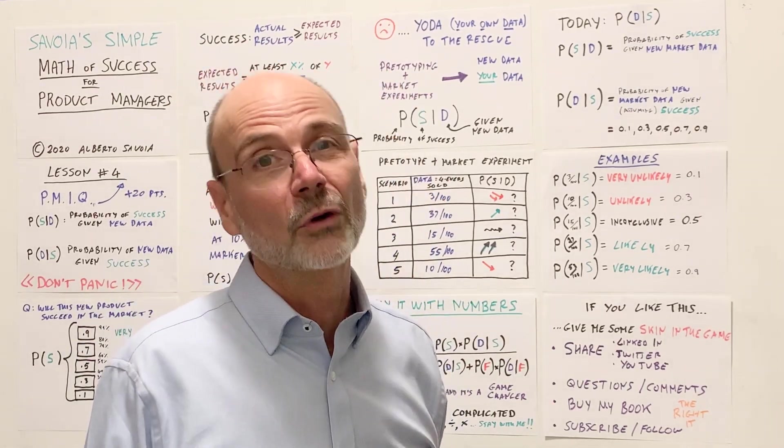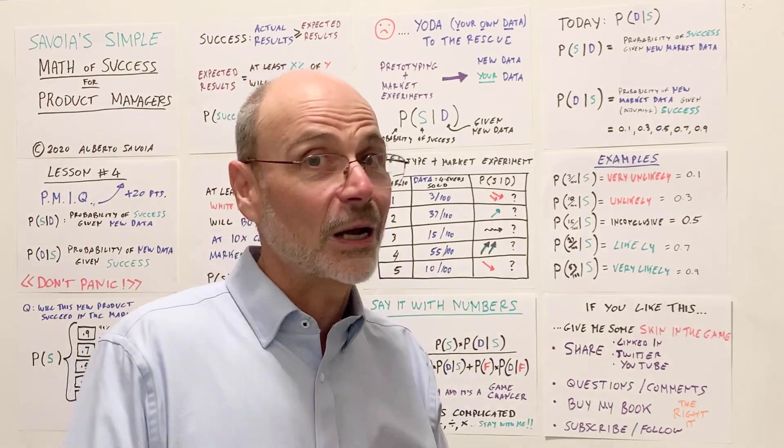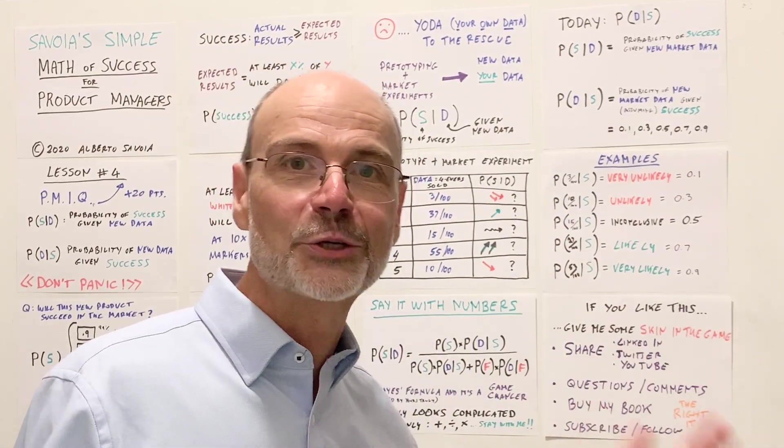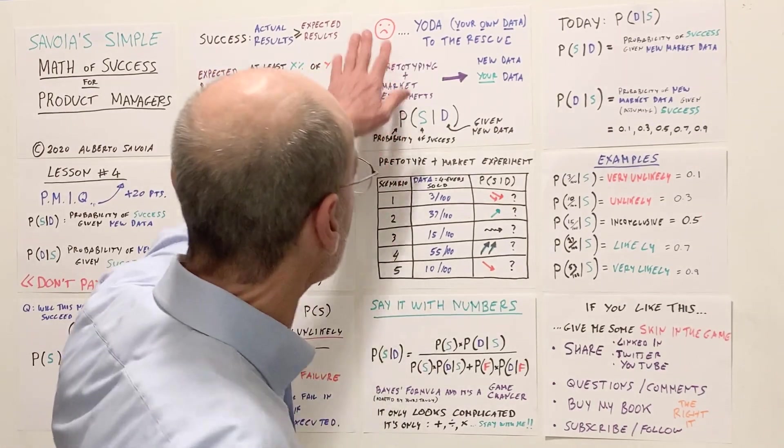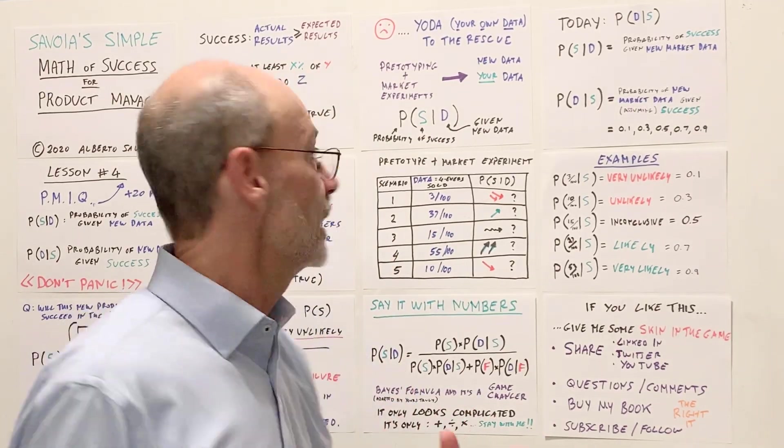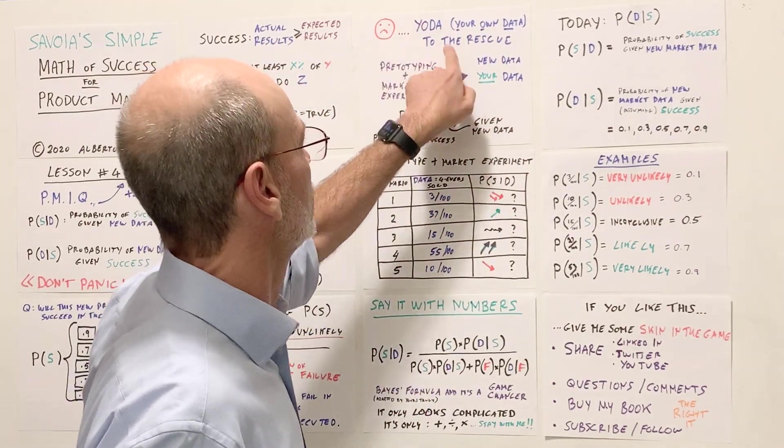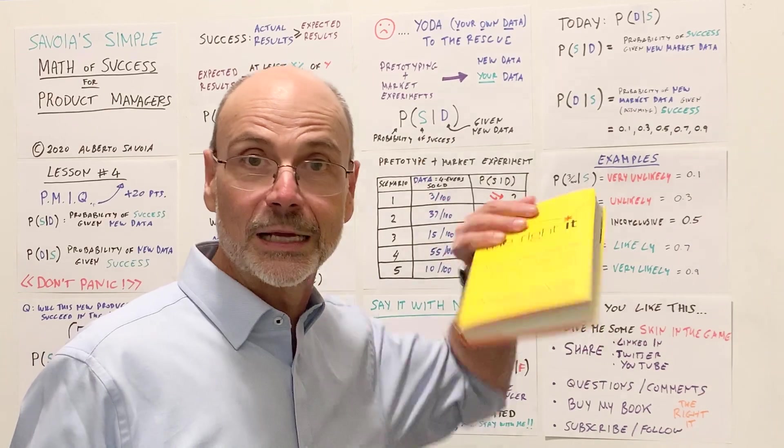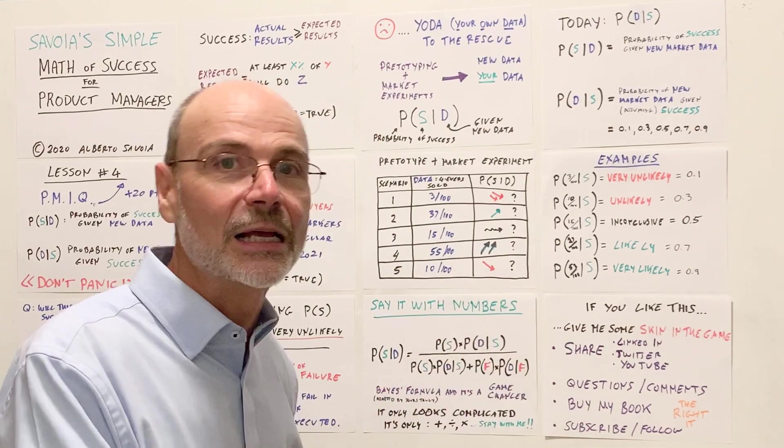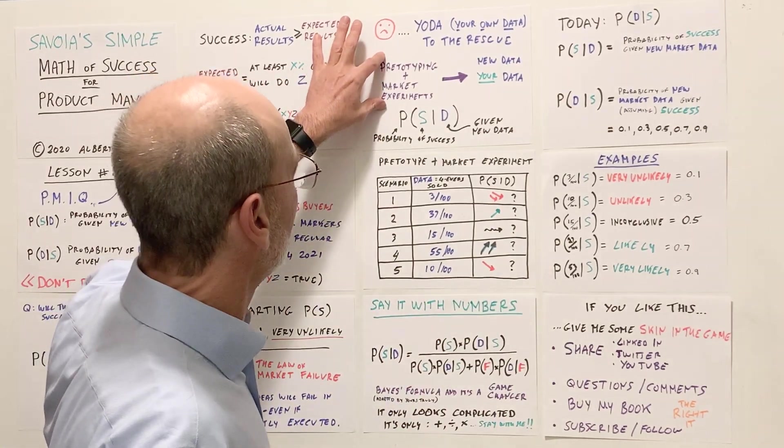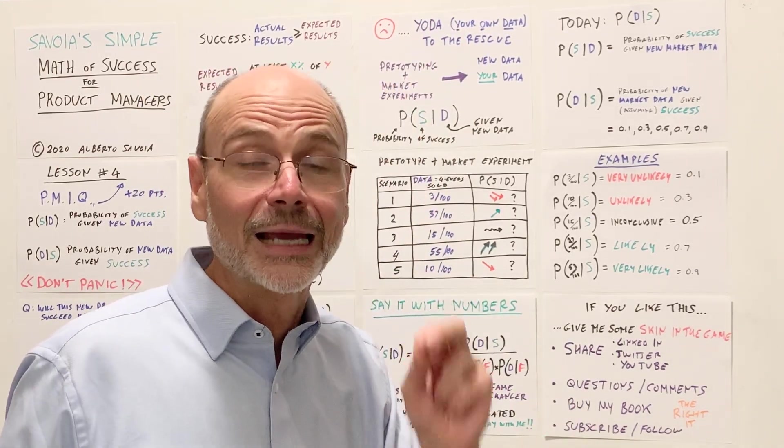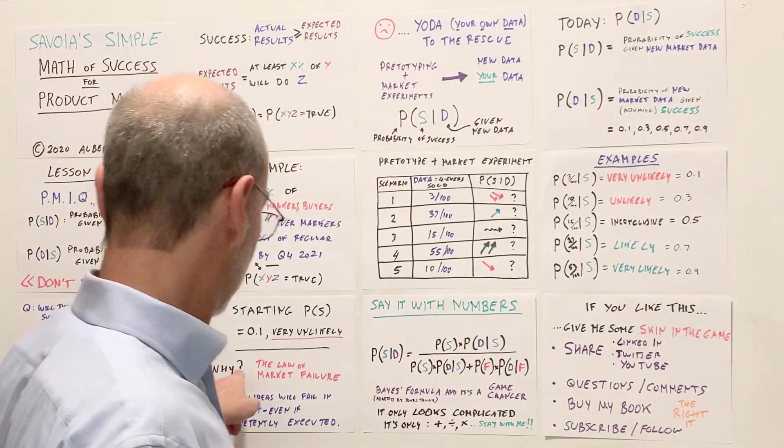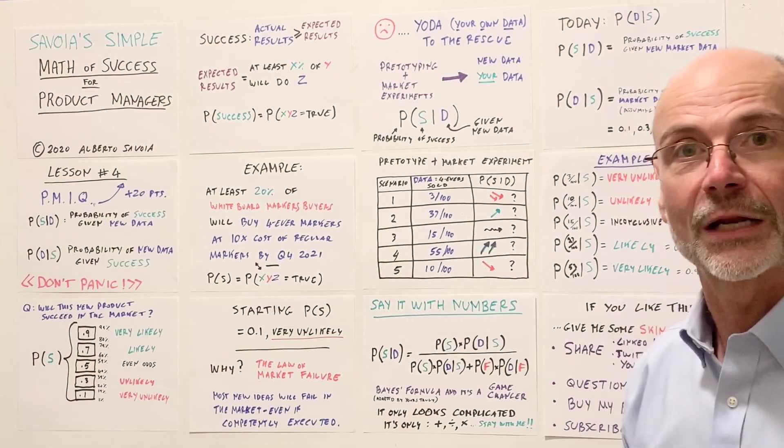I will not re-explain it here, but it says that most new ideas will fail in the market, even if competently executed. If you don't believe me, read the book, do your own market research, you'll see the law of market failure never fails. So at this point, you may be a little disappointed and say, well, oh, really, my odds of success are 0.1. Don't fear. That's why I'm here. I'm here to help you increase the odds of success from 0.1 to however high you want them to be. Ideally 0.9. I want to make sure that your product success will be very likely. So, and how do we change things? Well, you need your own data, right? You're going to collect your own data, which I abbreviate as Yoda, your own data, bring it to the rescue. How do you collect your own market data? You do pretotyping plus market experiment. What I explain in my book. There are many videos that explain that.